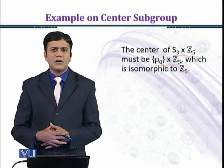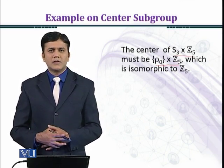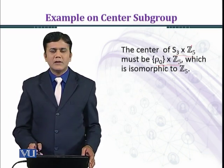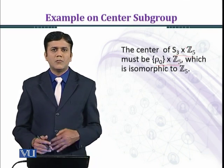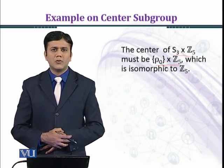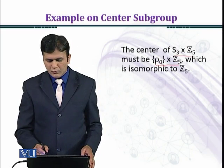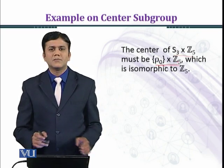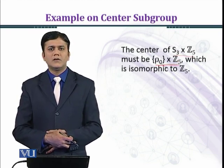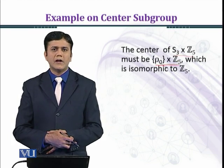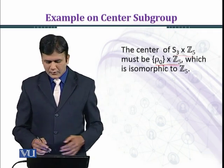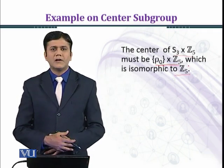Z5 under addition is an abelian group, and in an abelian group every element commutes with every other element. So if we want to find the center of S3 × Z5 — that is, the elements that commute with every element of S3 × Z5 — those elements will be of the form (ρ0, z) for z in Z5, giving us: (ρ0, 0̄), (ρ0, 1̄), (ρ0, 2̄), (ρ0, 3̄), (ρ0, 4̄). There are five elements, and this set is isomorphic to Z5.